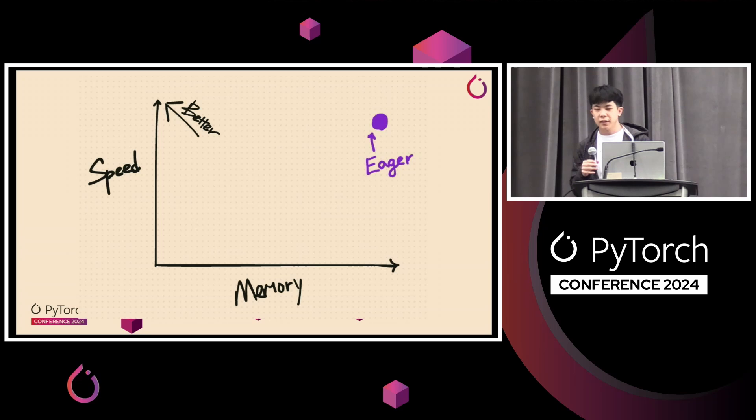So plotting this Eager, if we plot Eager on this diagram that sort of trades off between speed and memory, Eager falls on sort of the top right corner, where relative to other checkpoint APIs, it uses more speed but also uses more memory. So on the top left corner of this diagram is sort of the sweet spot where you have more speed but also use less memory. And as we go through this presentation, we'll start to sort of fill out this diagram with the other techniques and see where they place relative to Eager.